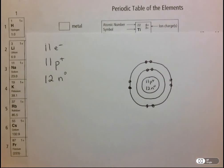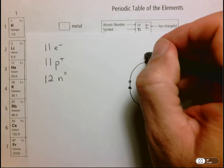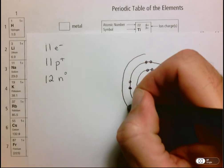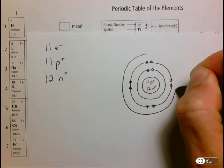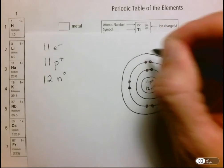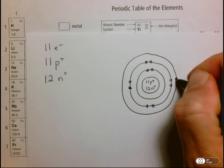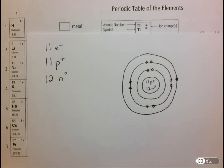As we expected, we have to go to a third shell. Here we have our one electron in the third shell.